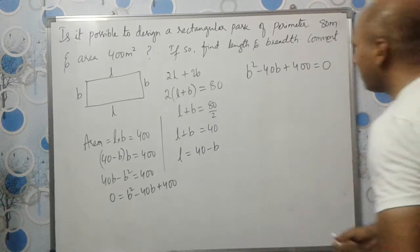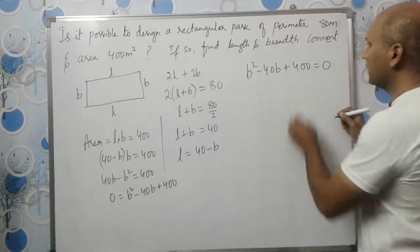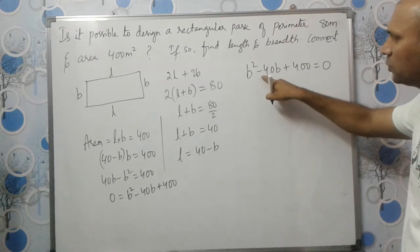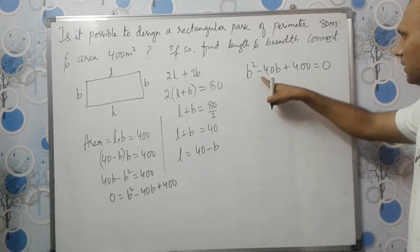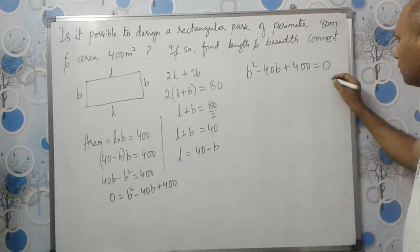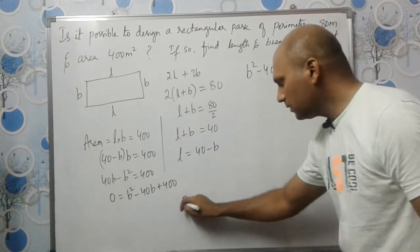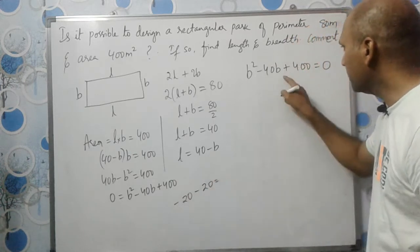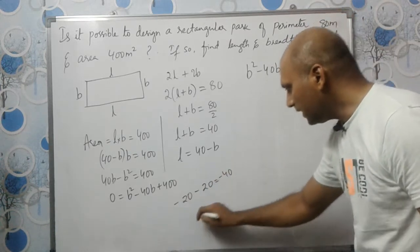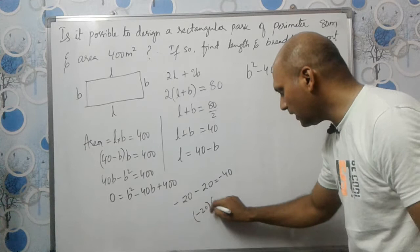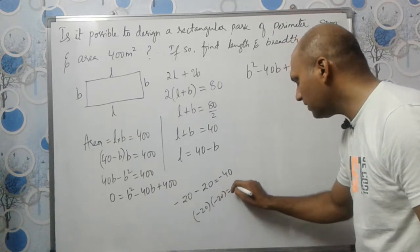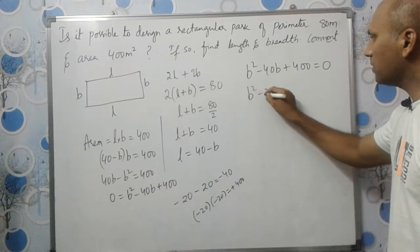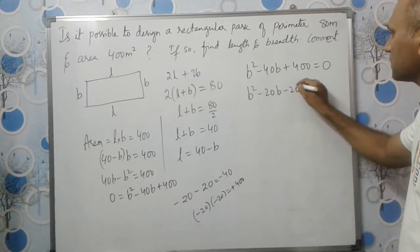Factors of 400, and the middle term should be -40. So 20 and 20 will work. -20 will give us the middle term -40, and if we multiply -20 and -20 we'll have +400. So this is B²-20B-20B+400=0.